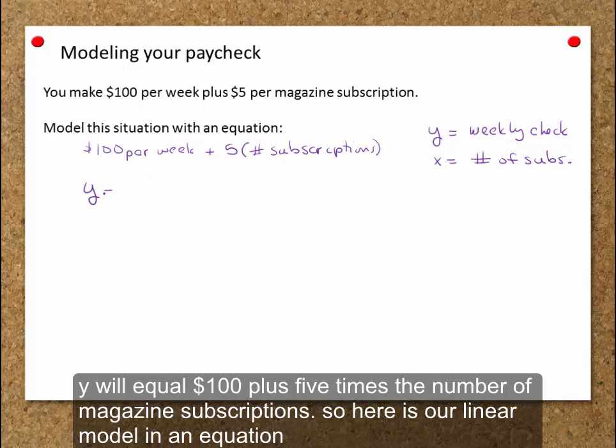y will equal $100 plus 5 times the number of magazine subscriptions. So here is our linear model in an equation.